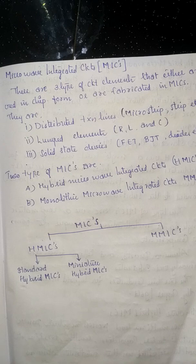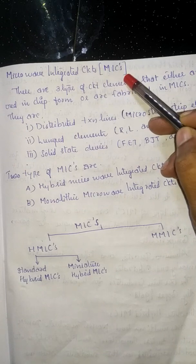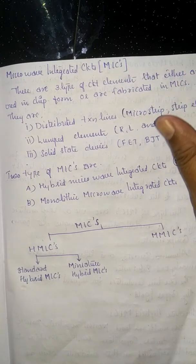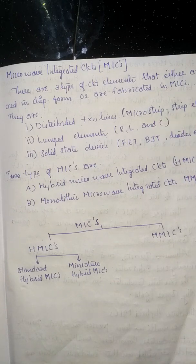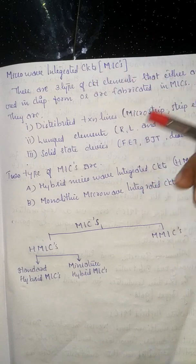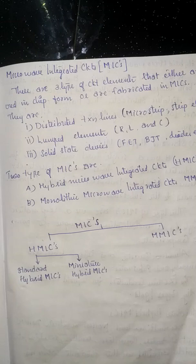Microwave integrated circuits, also called MICs, are used in microwave networks and can be fabricated in chip form. Within a single chip, all the techniques and components needed for designing MICs can be fabricated together.